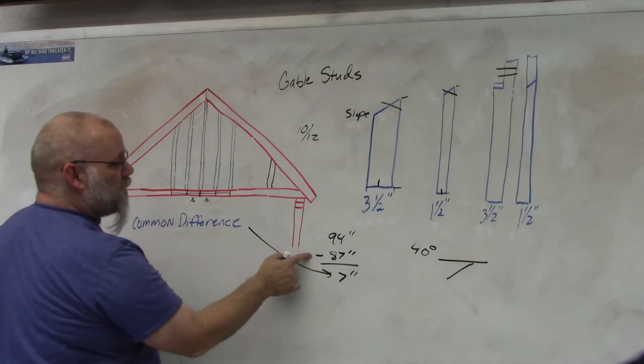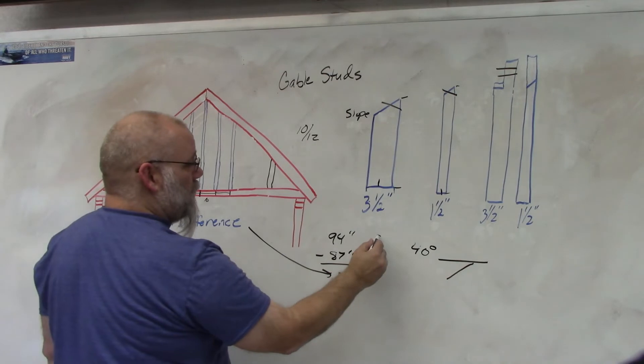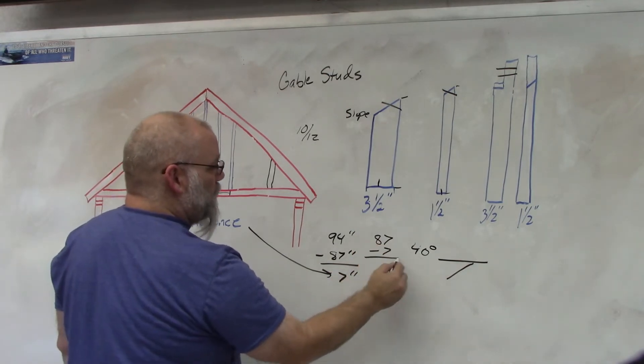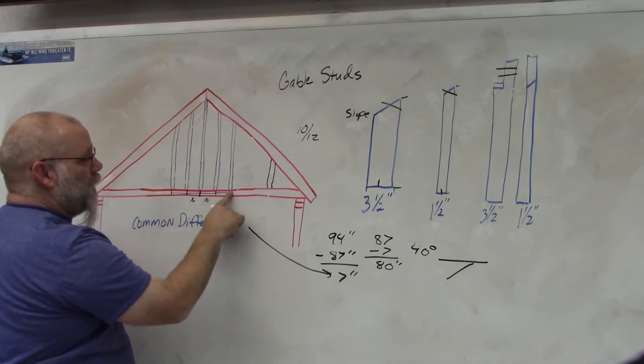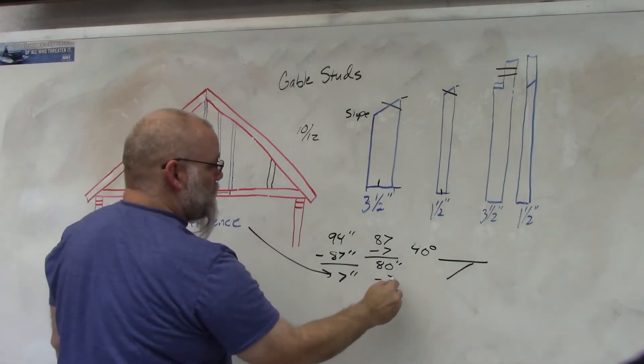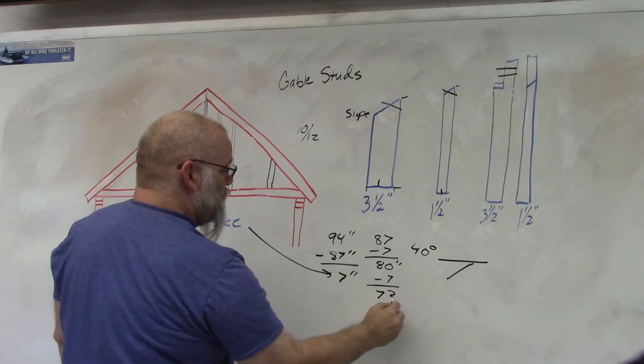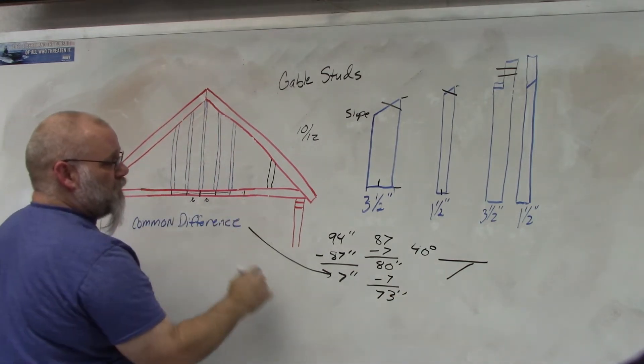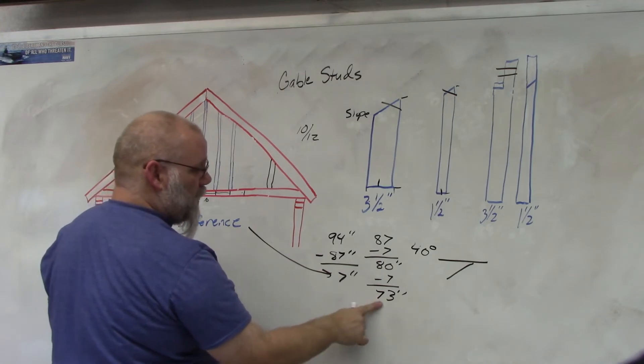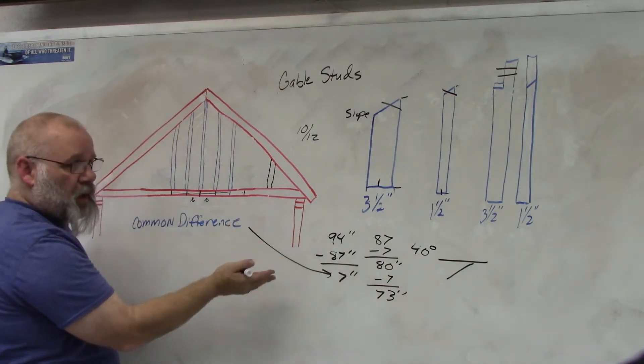Now to find the next length I would take the 87 minus 7 so the next one would be 80 inches. Then I would subtract 7 inches and I get 73 inches so the next one over would be 73 inches and then you just keep subtracting until there's no space left.